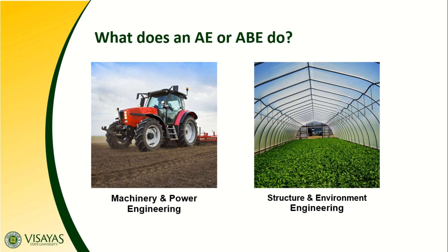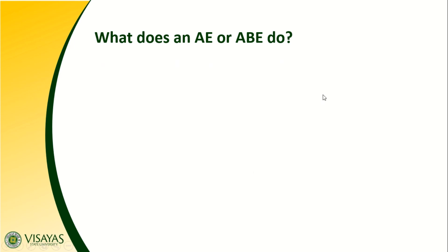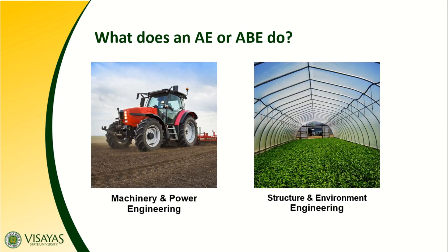In Machinery and Power Engineering, we also study the different levels of mechanization — from the simplest level, which is hand tool technology or the use of tools powered by human muscle, to the use of animal muscle as a power source, and then to mechanical power — the use of agricultural machinery powered mechanically. With this, we can reduce human effort, improve the quality of the product, and increase the yield and overall efficiency.